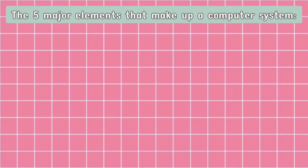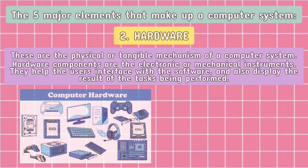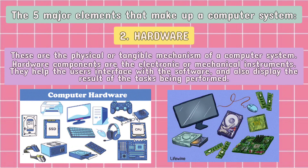The second element is the hardware. These are the physical or tangible mechanisms of a computer system. Hardware components are the electronic or mechanical instruments. They help the users interface with the software and also display the result of the tasks being performed.